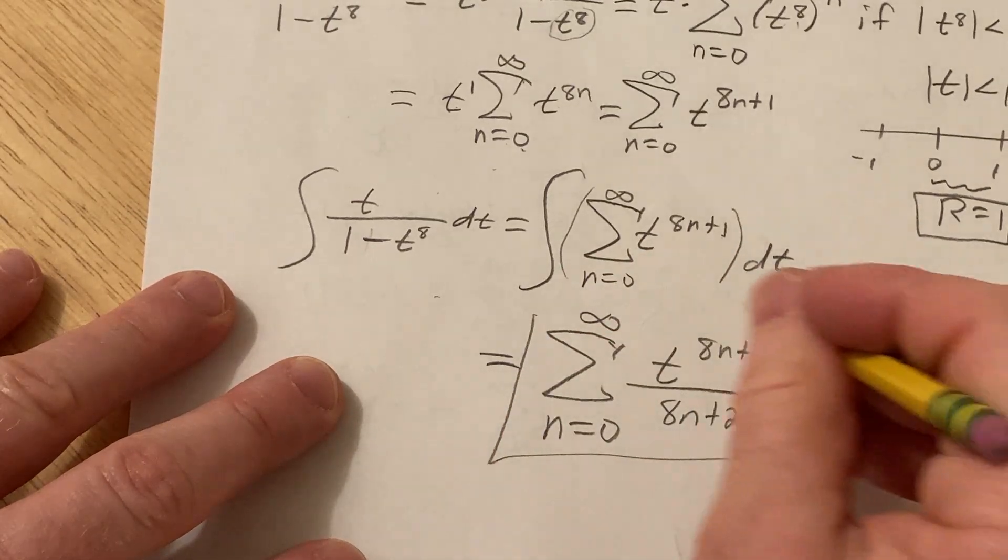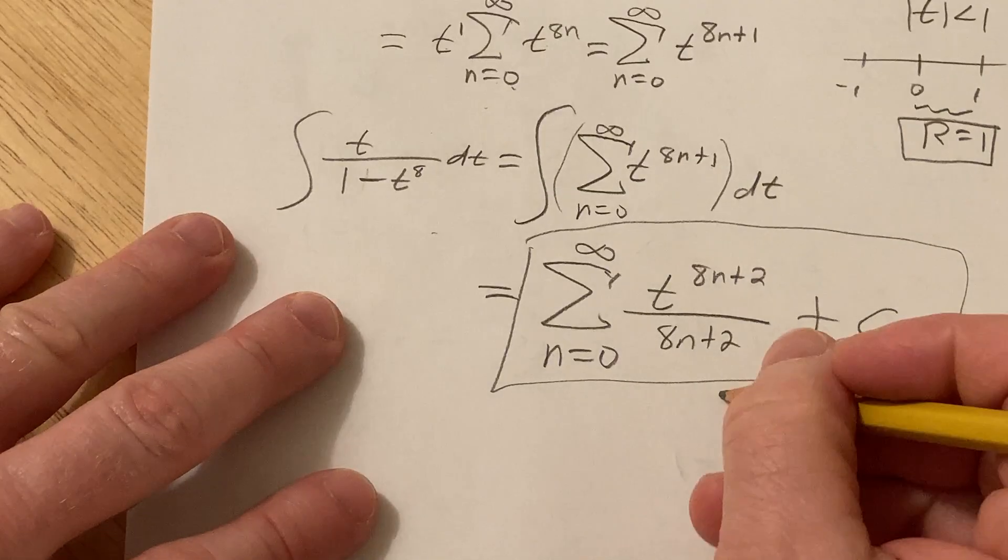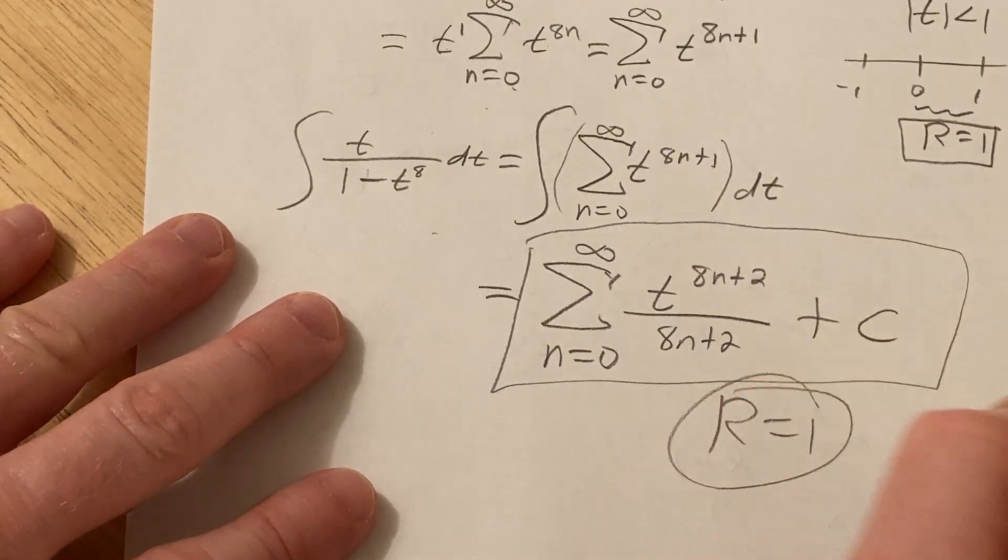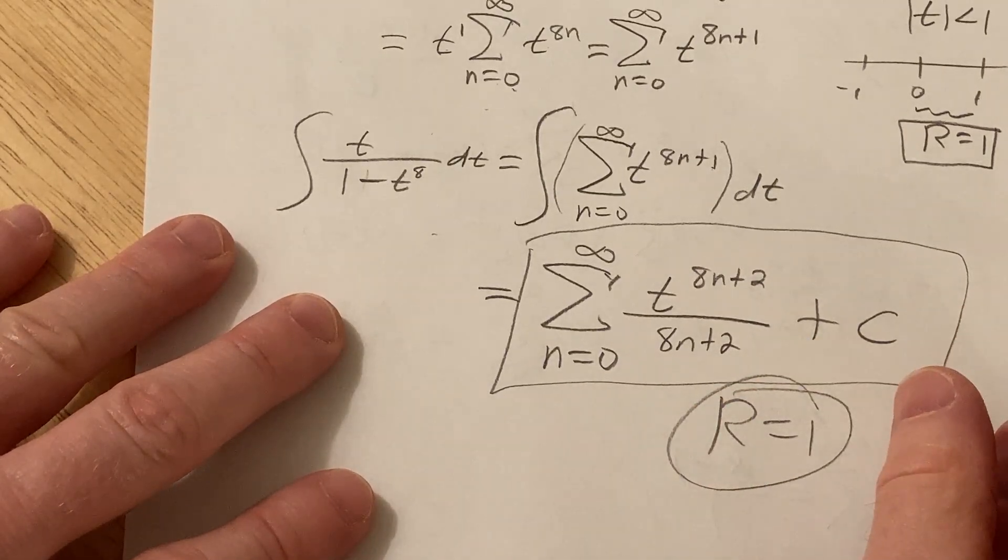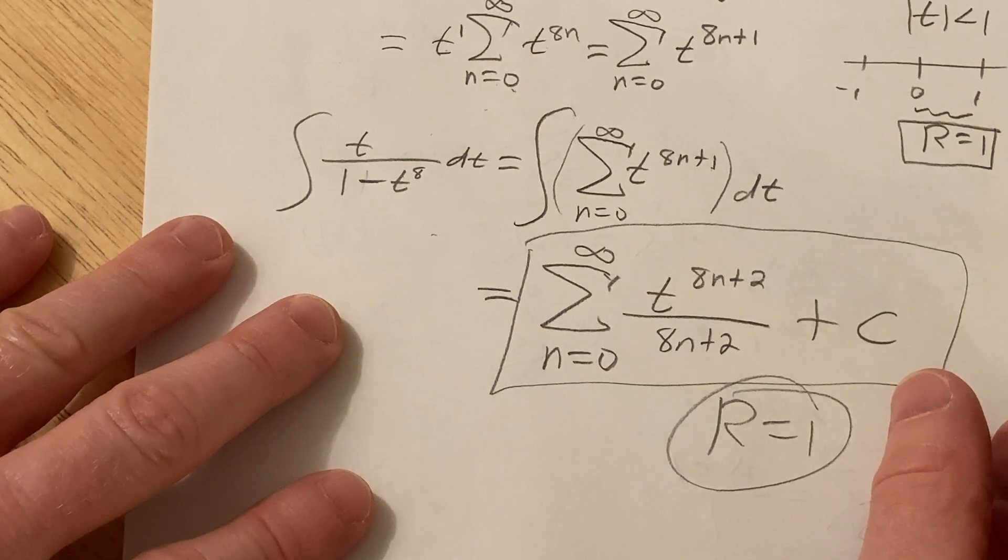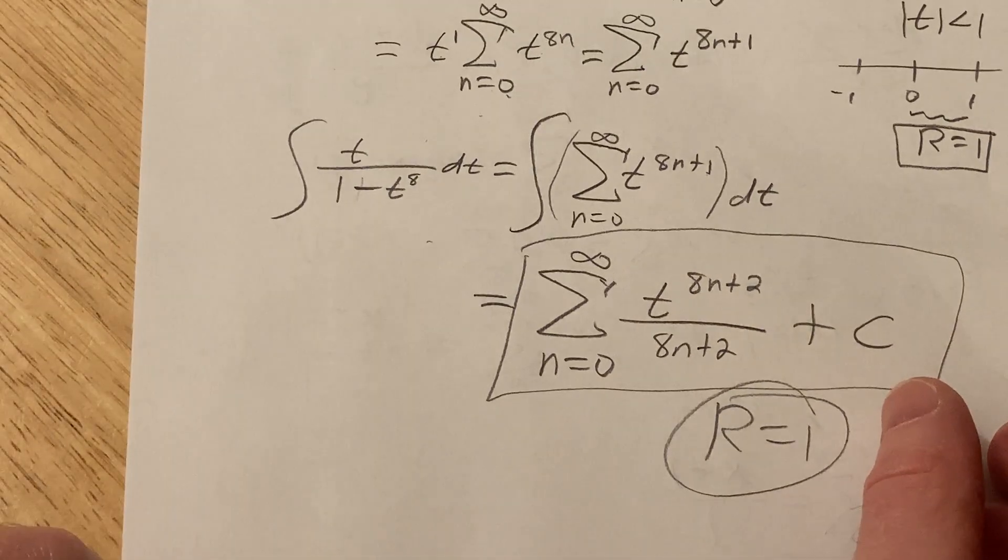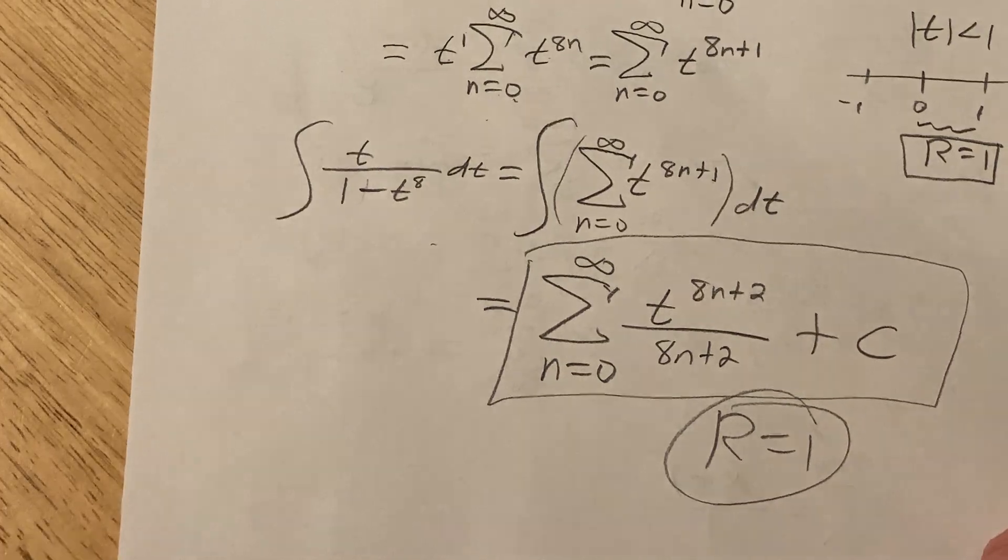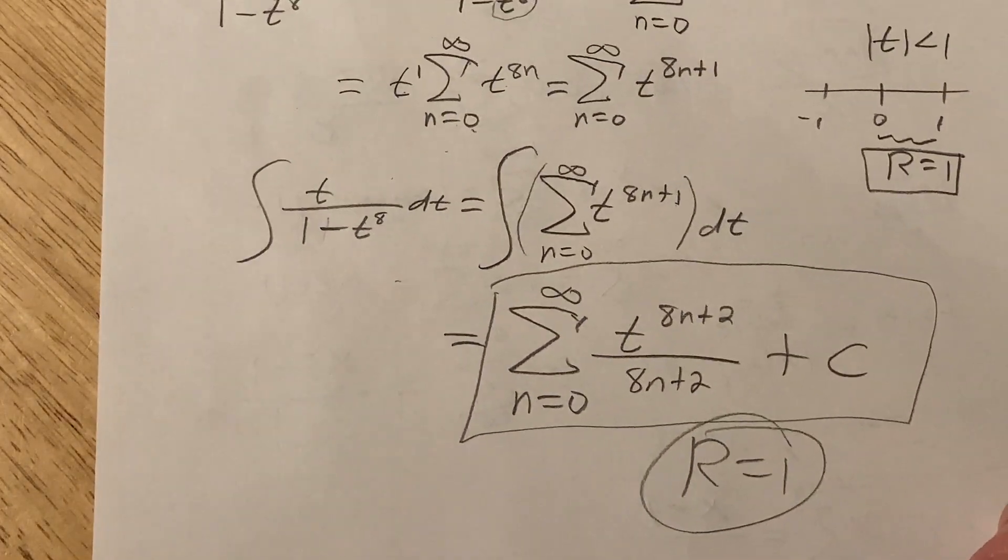And that's it, and the radius of convergence was one. So pretty easy to do, not difficult at all. I hope this video has been helpful to someone, good luck.